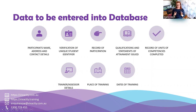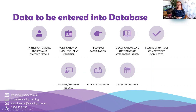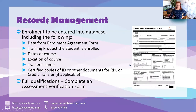This data is what you need in order to issue a new certificate. If someone comes to you two or three years down the track, they should be able to give you their address to verify they are actually the person whose certificate you're reissuing. Records management means enrollment data must be entered into the database — all AVETMISS data must be recorded, and that is the records you need to keep.